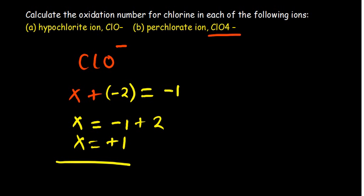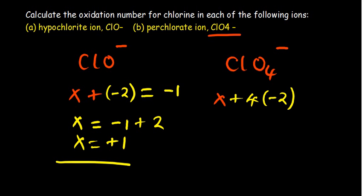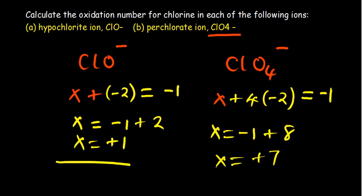For the second ion (ClO₄⁻): the charge is minus one. We put X for chlorine. We have four oxygen atoms, each with charge minus two, giving a total of minus eight. The net charge of the compound is minus one. So X plus four times negative two equals negative one, giving X equals negative one plus eight, so the oxidation number of chlorine becomes positive seven.